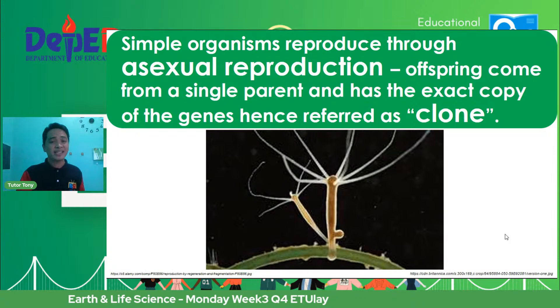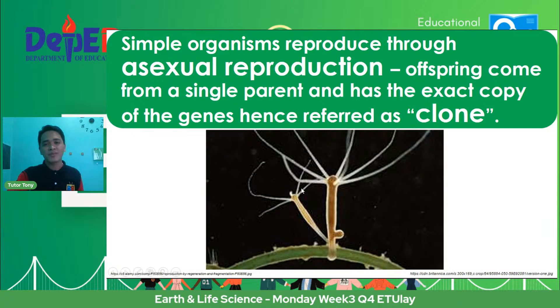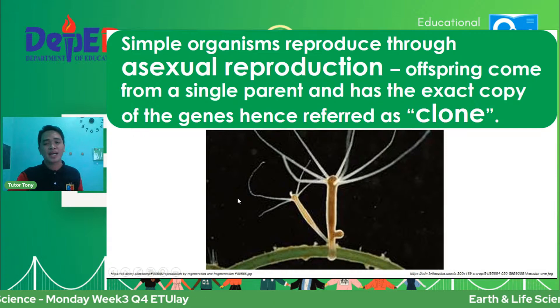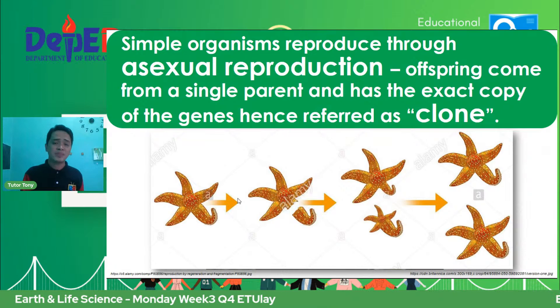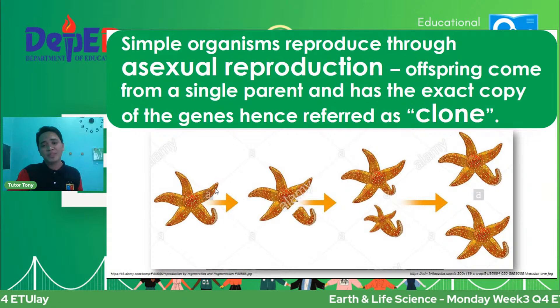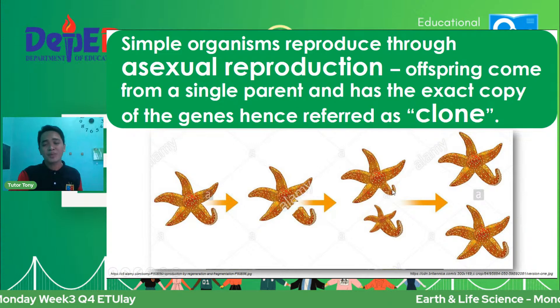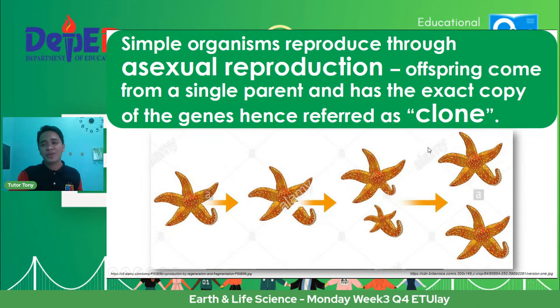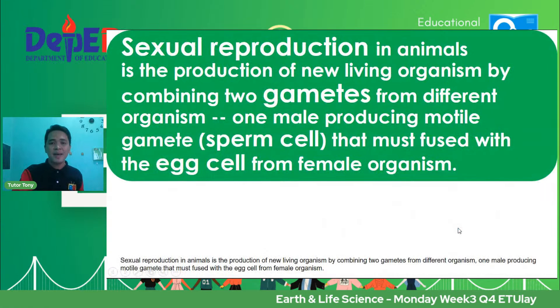As you would remember from junior high school science, starfish, although they can perform sexual reproduction, they can perform asexual reproduction as well. It has five arms — one arm can detach, and that arm can grow into a full-grown starfish. Then the original one also grows back. Kung baga, from one starfish, naging dalawa na sila. That is asexual reproduction — it's a clone, single parent lang.